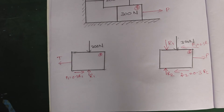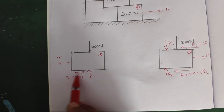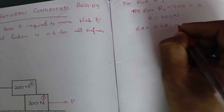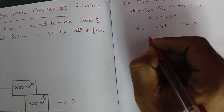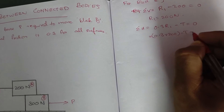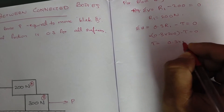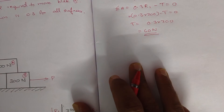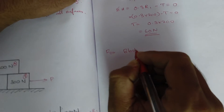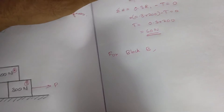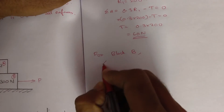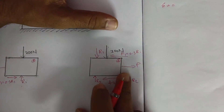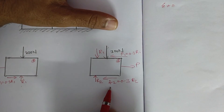R1 value is 200 Newton. Then 0.3 into 200 minus T equals 0, so T equals 0.3 into 200, which is equal to 60 N. T value is 60 N. Applying the horizontal component equation for block B, P positive and F2 negative and F1 negative.